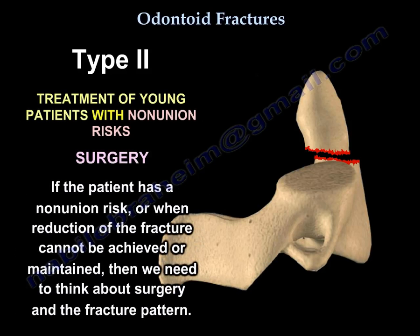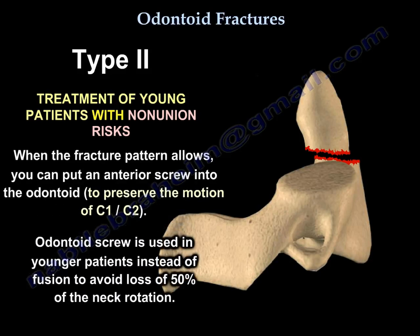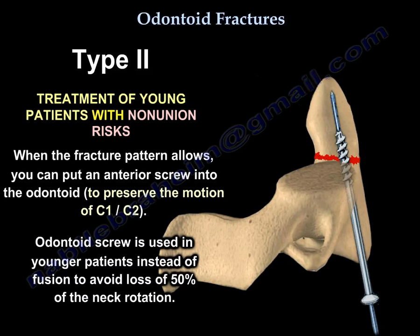Surgery is done if the patient has a non-union risk, or when reduction of the fracture cannot be achieved or maintained. We need to consider whether the fracture pattern would allow placing an anterior screw into the odontoid to preserve the motion of C1 and C2. The odontoid screw is used in younger patients to avoid loss of 50% of neck rotation.